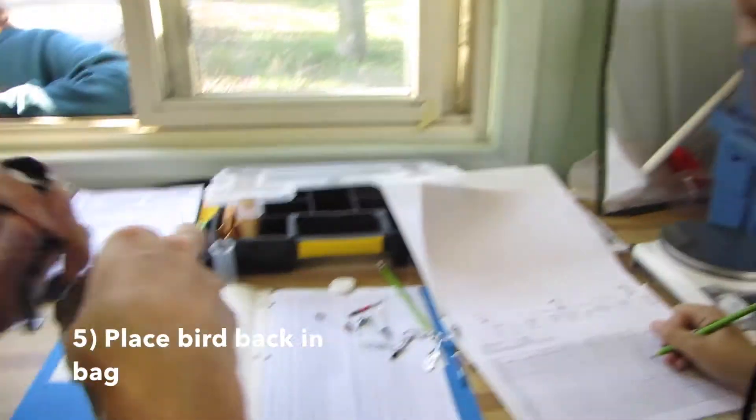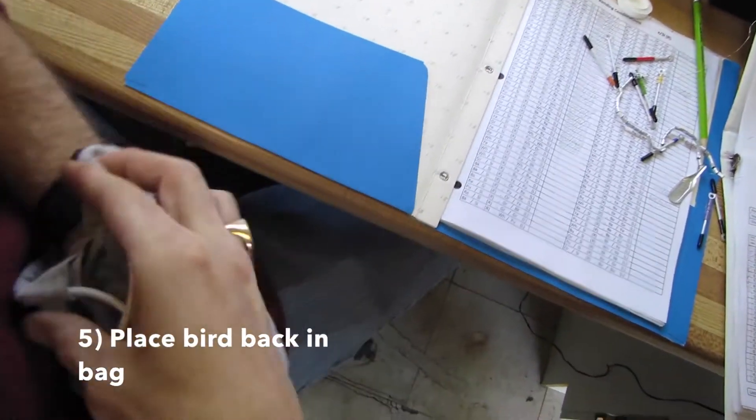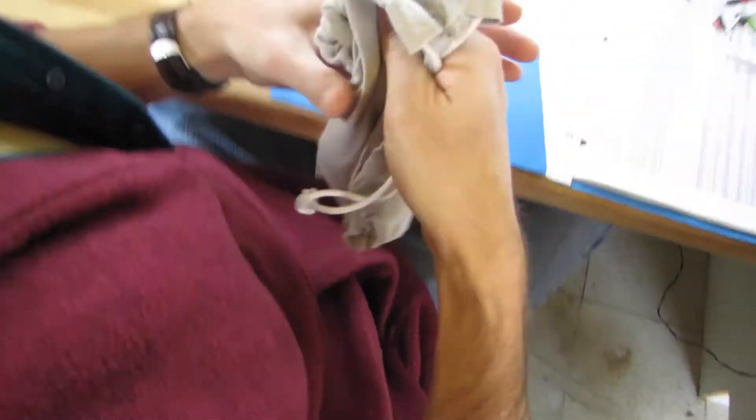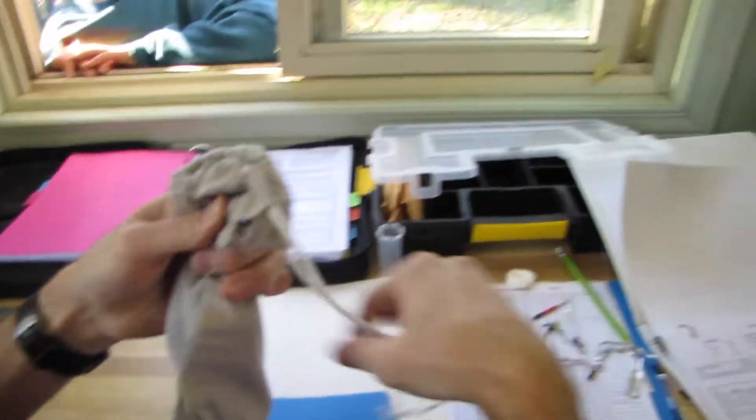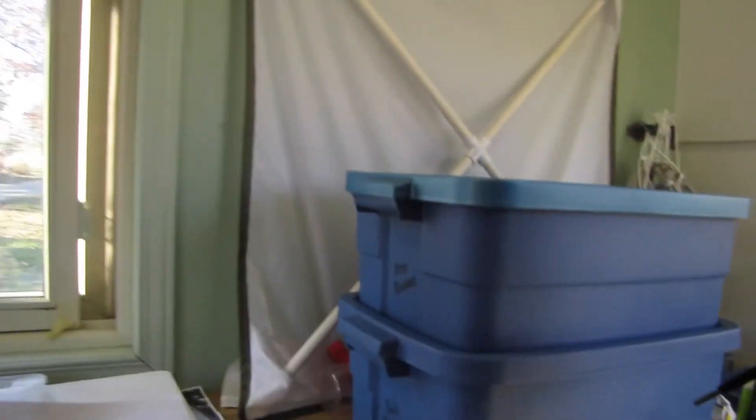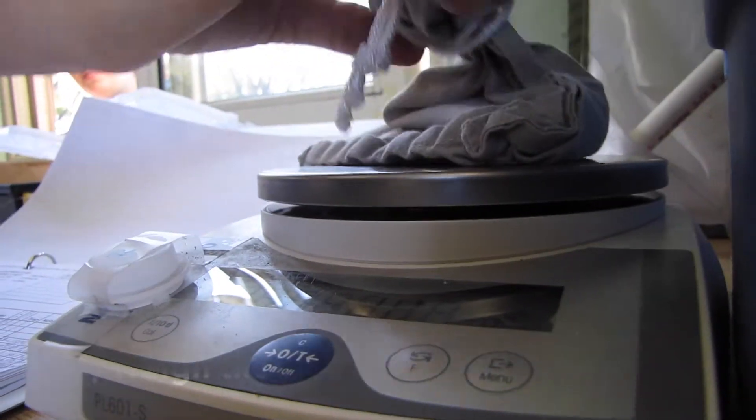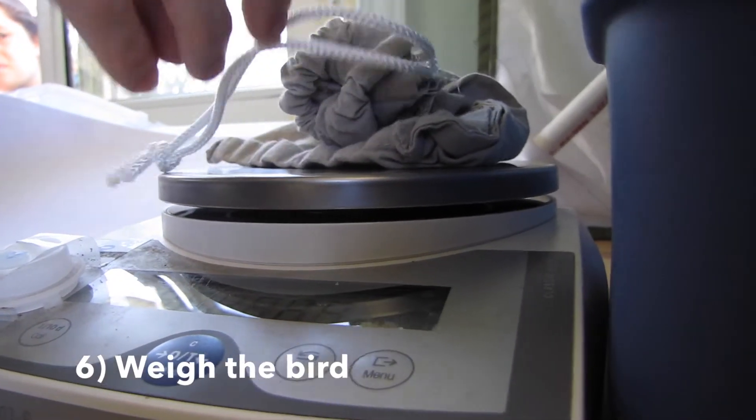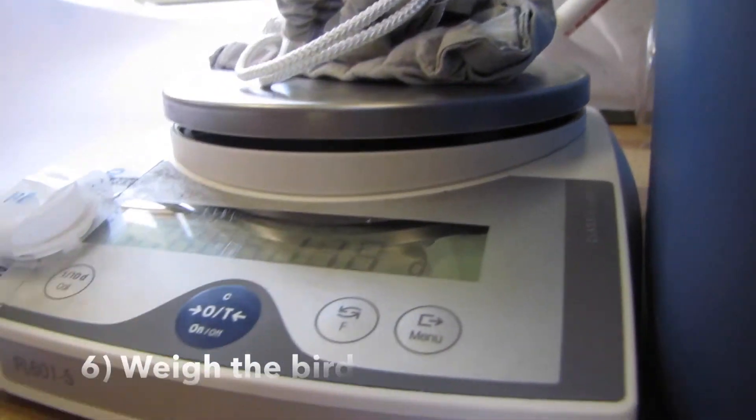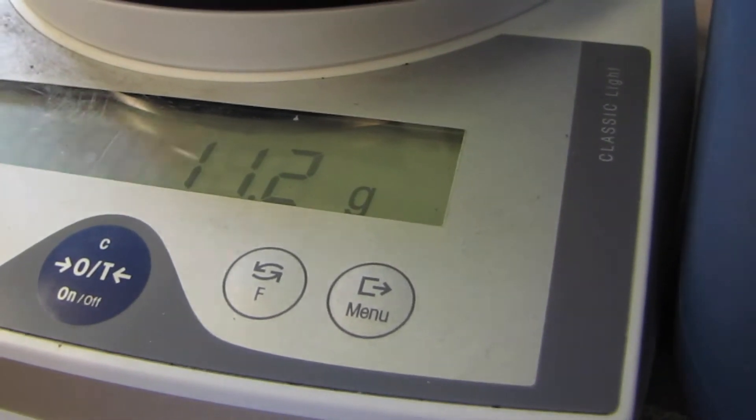So we pop him back in the bag. There we go. And make sure he doesn't come out of the bag. And we tie the bag, especially for chickadees because they're escape artists. And then we put them on here and weigh the chickadee. So 11.2.